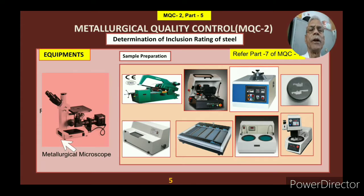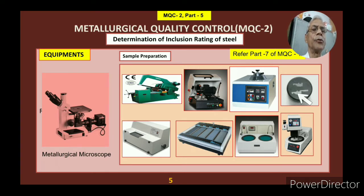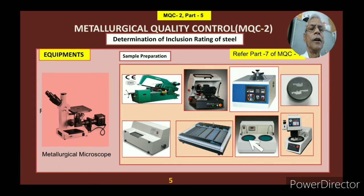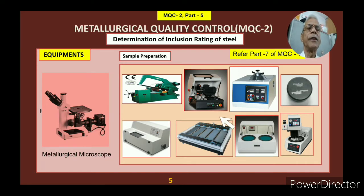The equipment and materials used in preparation of the sample include a metallurgical microscope, two types of cutting machines, a mounting machine with mounted steel samples, an endless belt grinder, emery paper grinding at different grits, manual polishing, and mechanized automated polishing. You can also refer to part 7 of MQC1 where sample preparation techniques are explained in detail.